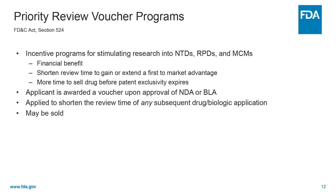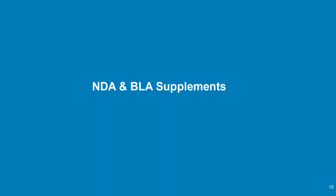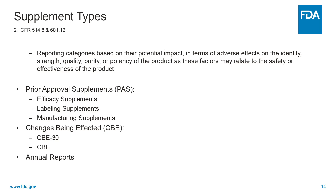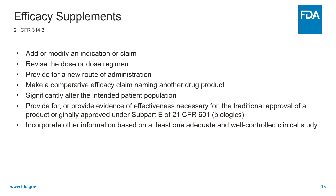Post-approval changes to NDAs and BLAs are referred to as supplements. The type of supplement an applicant submits depends on the data and potential impact of the change. Supplements should be submitted to the FDA as the appropriate supplement type. If after initial review the FDA determines the supplement type is not correct, it may upgrade or downgrade the submission type. There are three types of prior approval supplements, two types of changes being affected, and annual reports. Efficacy supplements are the type that has the longest review clock, which is typically 10 months.